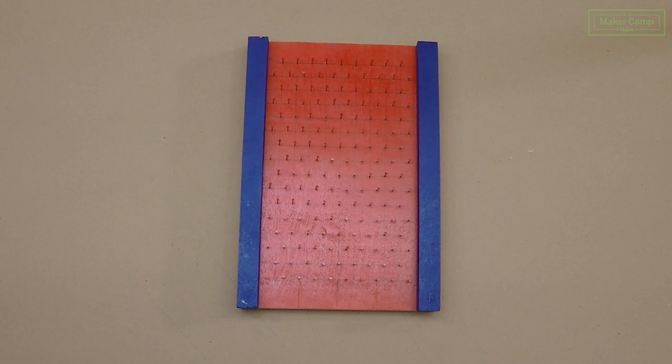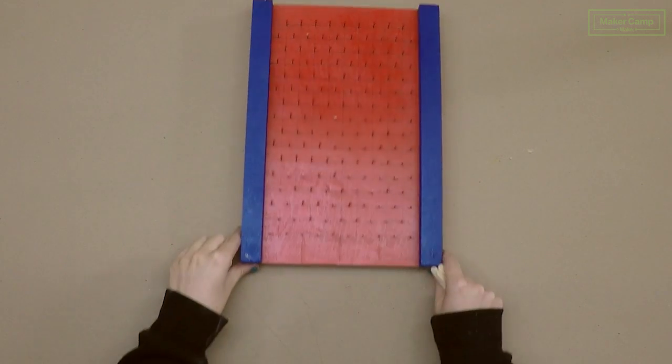Paint it! We actually spray painted our entire board red including the nails because we thought that would look kind of cool. And then we painted our side bumpers blue and then glued them on separately.